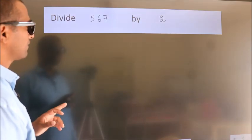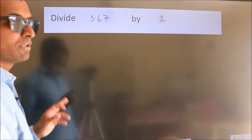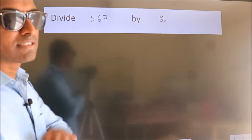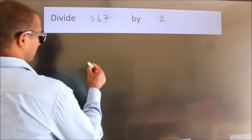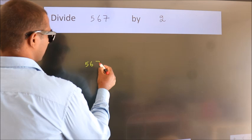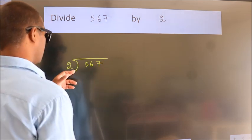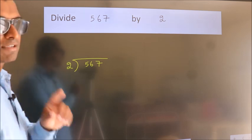Divide 567 by 2. To do this division, we should frame it in this way: 567 here, 2 here. This is your step 1.